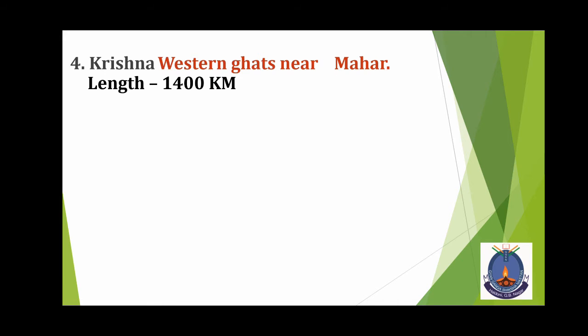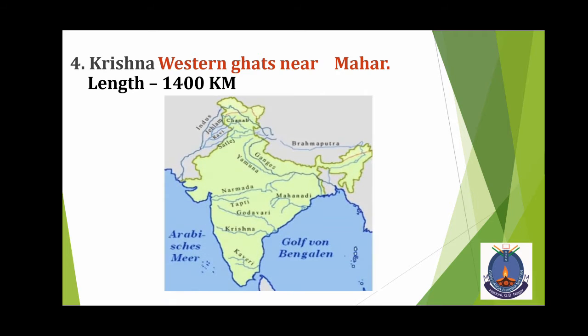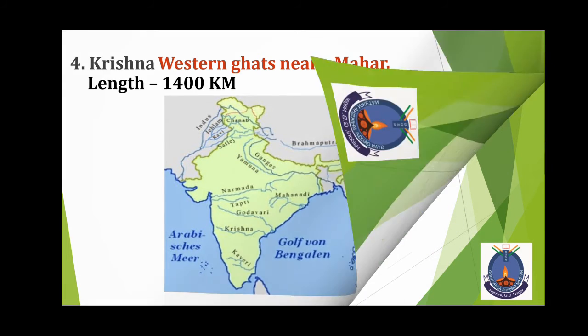Krishna. Its origin is Western Ghats near Maharashtra. Its length is 1400 km. You can see Krishna River on the map.